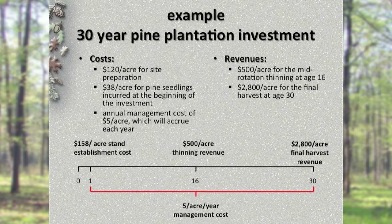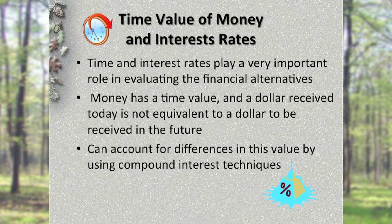A professional forester uses a set of financial formulas to answer that question. It's very important to remember that money has a time value. One of the ways we account for the time value of money is by using a discount rate. That $2,800 final harvest revenue is not worth $2,800 today — you'd rather have $2,800 right now than wait 30 years. The present value of that $2,800 will be much less. Interest rates allow us to account for time value and also help ensure we earn a minimum acceptable rate of return. So, how much could you earn if you invested your tree-planting money elsewhere? You could use that rate of return as the discount rate.